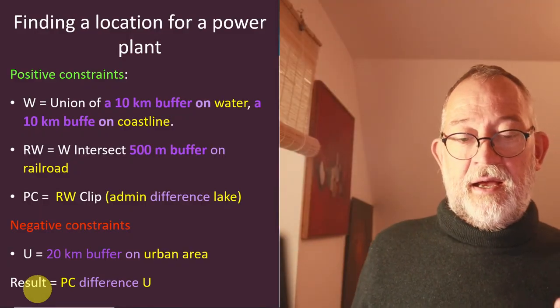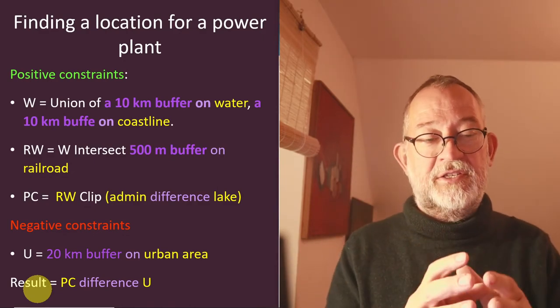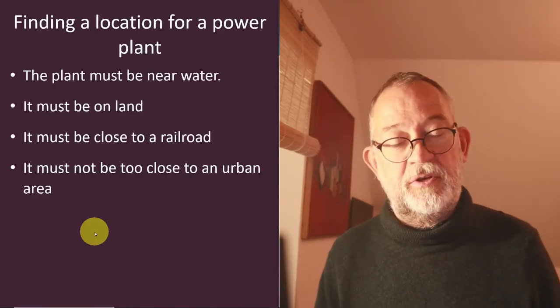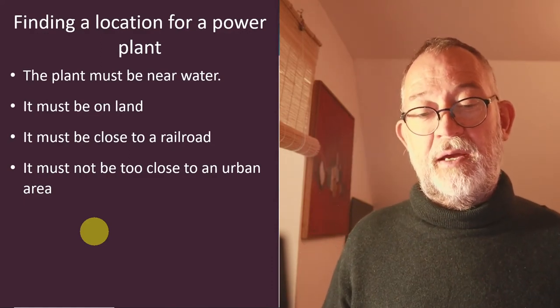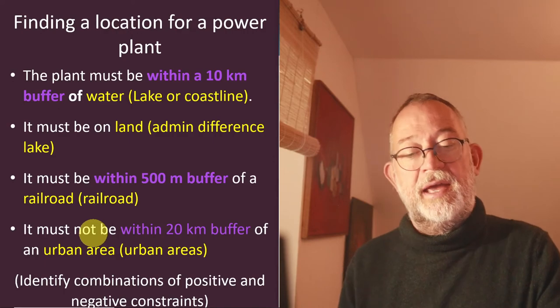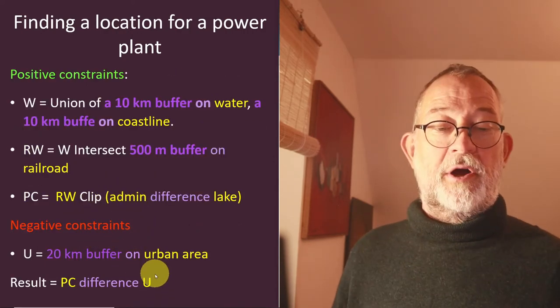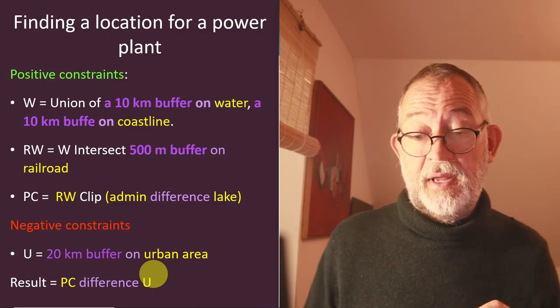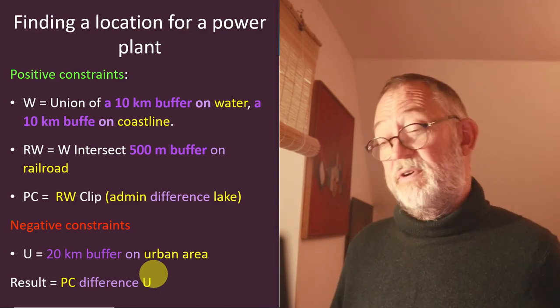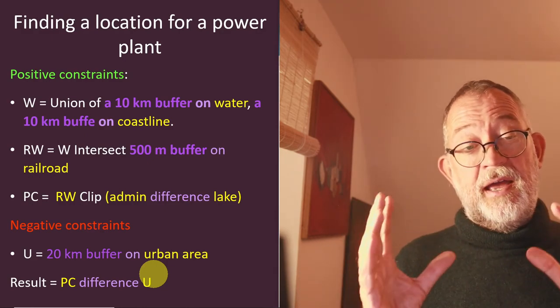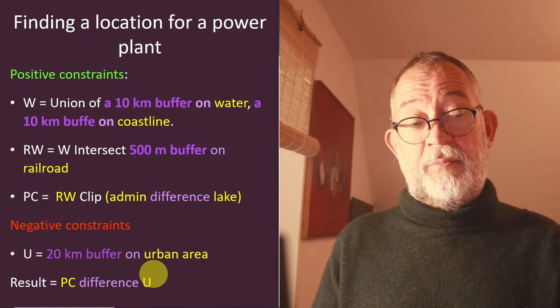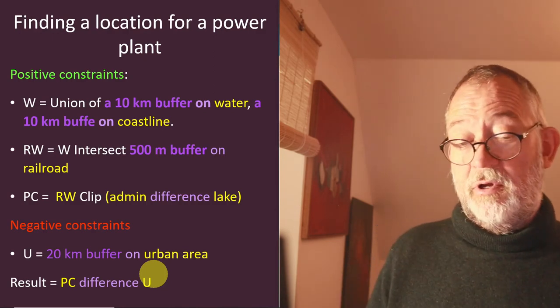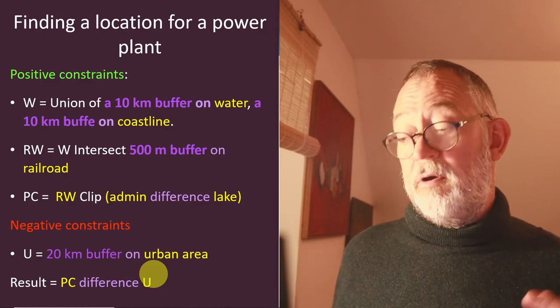So basically, that's all for this video where I've gone from a text description of where my fictive power plant could be and ended up with a series of operations I can perform on data in order to find out where that power plant could be. In the next video in this series, I will try and look at how this can be implemented in QGIS using the visual modeling tool. So, hope to see you there on another video. Bye!